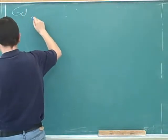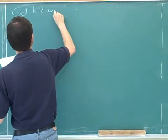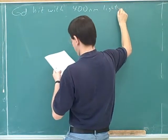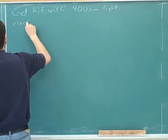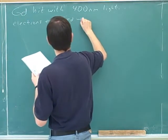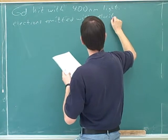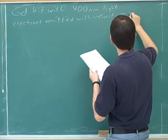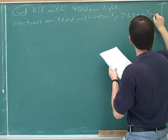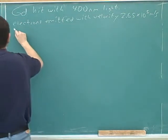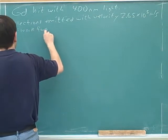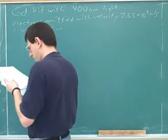Gadolinium is hit with 400 nanometer light. Electrons are emitted with velocity 2.65 times 10 to the fifth meters per second. And the question is to find the work function.